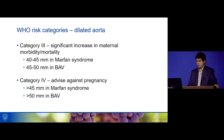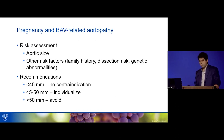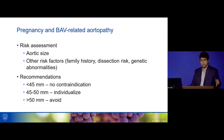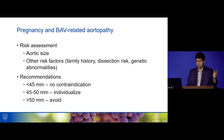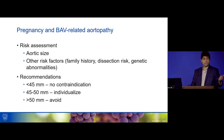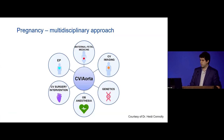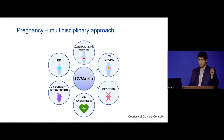In our clinic we take a more individualized approach. For risk assessment, we consider aortic size along with family history, dissection risk, and concomitant genetic abnormalities. Our threshold is: less than 45 mm — no contraindication; greater than 50 mm — avoid pregnancy; in the 45–50 mm range, individualize to the patient. And as Dr. Connelly emphasized, pregnancy requires a truly multidisciplinary approach involving anesthesia, MFM, cardiology, and electrophysiology — you really have to approach this as a team.